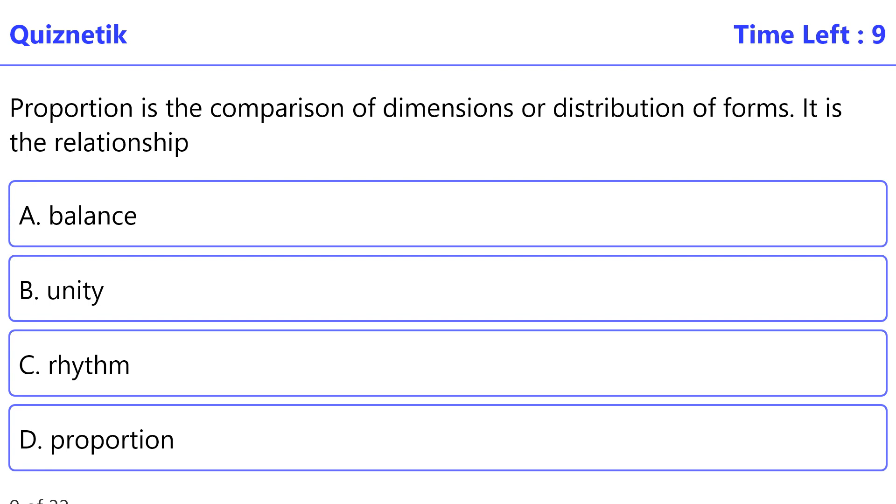Proportion is the comparison of dimensions or distribution of forms. It is the relationship and scale between one element and another, or between a whole object and one of its parts. The correct option is D, proportion.